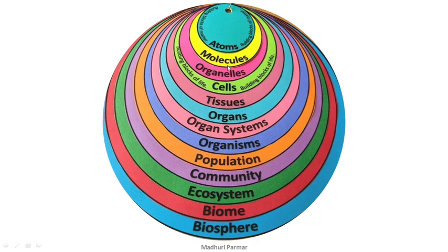Different molecules make up organelles and different organelles come together and make cells. Cells are the building blocks of life and they are the smallest living things — the smallest living unit. Different cells come together to form tissues. A tissue is a group of cells which does some specific function. Then such tissues come together to form organs.